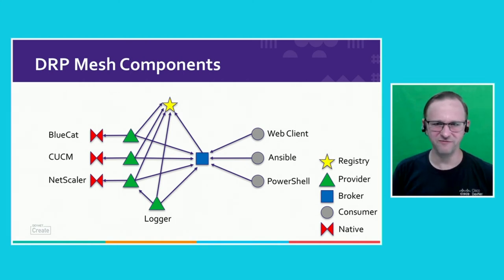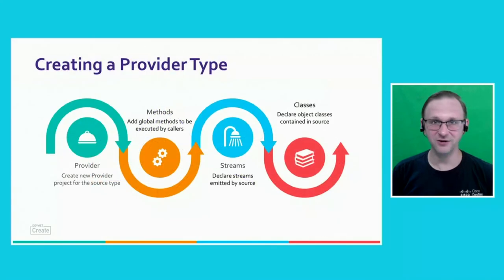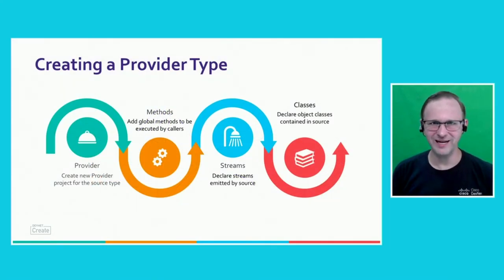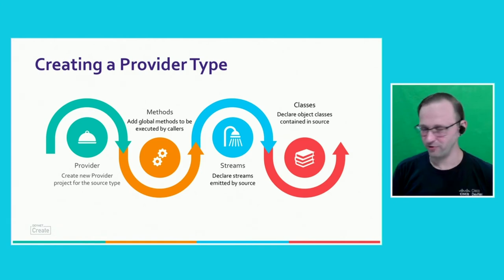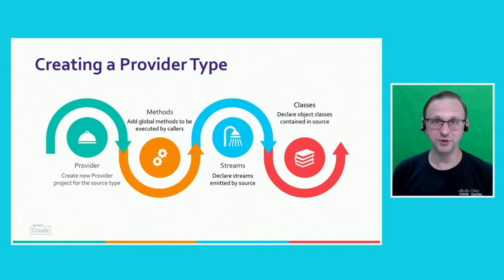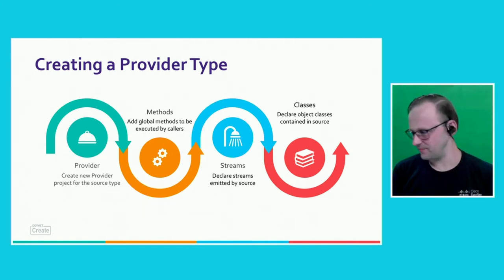To understand what a provider is made of, we'll take a look at how we create one. When we create a provider, we need to give it a series of global methods. Optionally, we can tell it what streams will be emitted from the provider. And most importantly, the object classes that will be referenced from the provider. For instance, in the case of Call Manager, we would have a list of CUCM users, CUCM devices, that sort of thing.